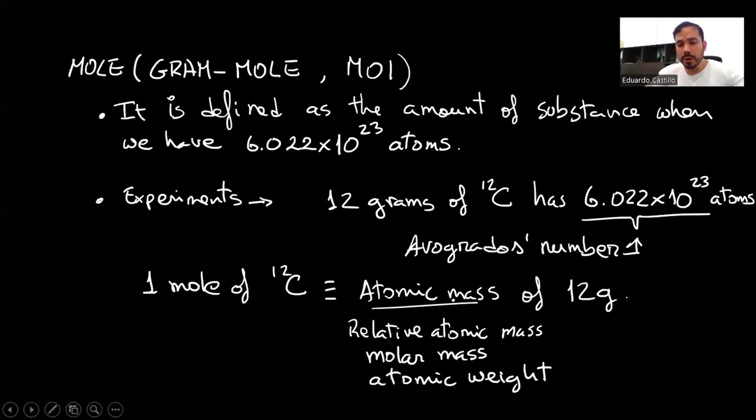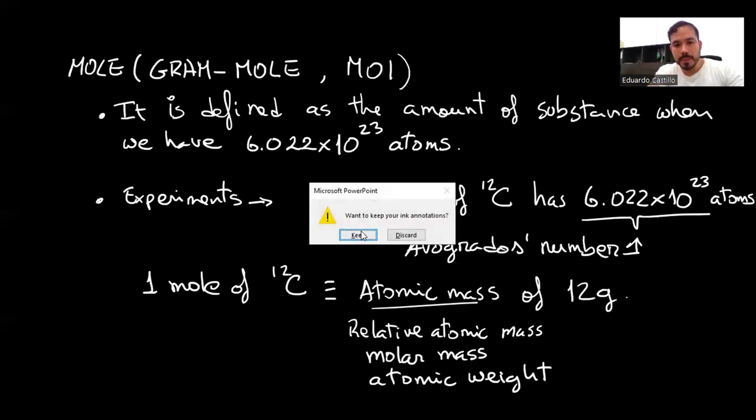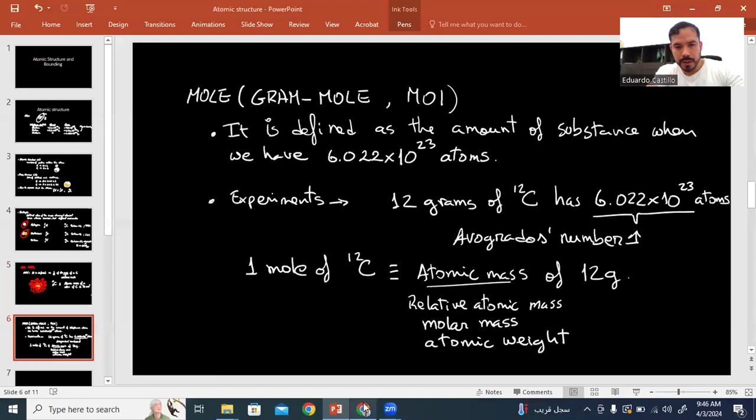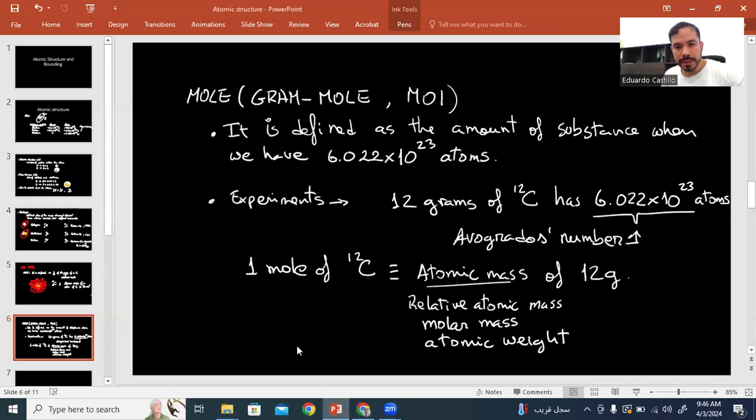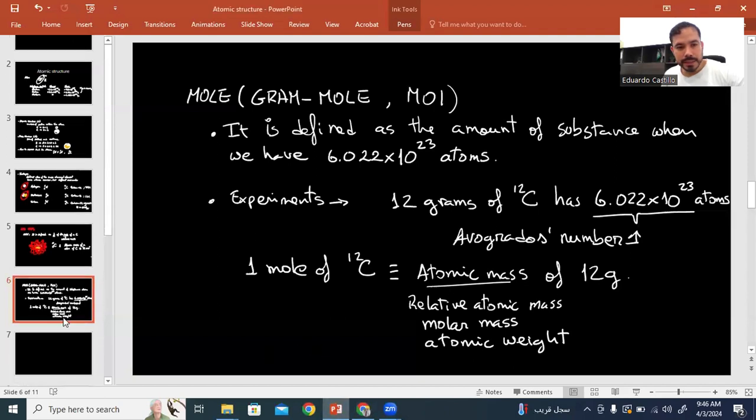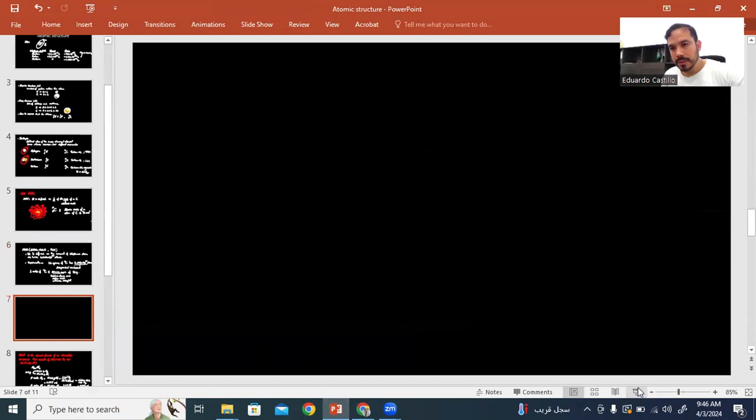Now let us explore some elements in the periodic table. Let's look for carbon. So carbon shows 6 and 12.01. So if I go back to my slide, see that we have the element carbon. It has 6 and it has 12.011.